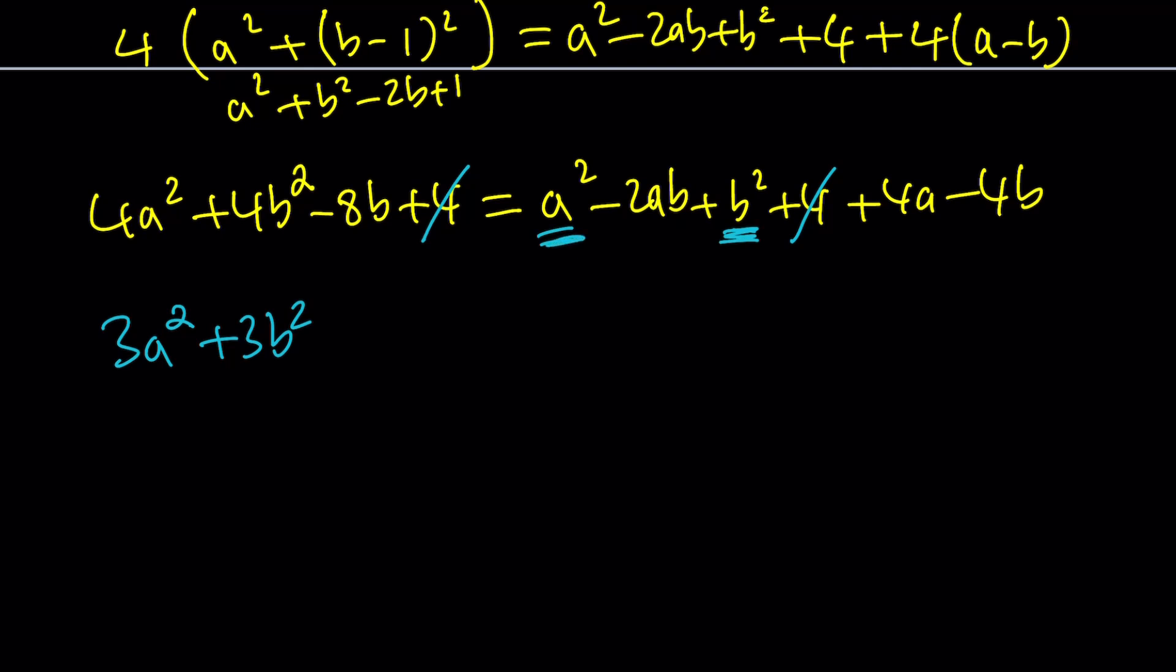And then I'm going to go ahead and bring in this, which is going to be plus 2AB. And then I'm going to go ahead and bring this 4A. I don't have any A on the left, so it's just going to be minus 4A. And then negative 4B, we're going to bring it as plus 4B. Negative 8 plus 4 is negative 4B. And that's going to equal 0. Make sense? So we were able to get everything on the same side.